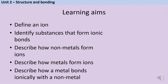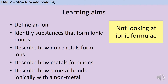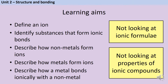By the end of this video, you should be able to define what we mean by an ion, identify substances that form ionic bonds, describe how non-metal atoms form ions, describe how metal atoms form ions, and complete extended response questions describing how a particular metal bonds with a non-metal. We're not going to look at ionic formulae or the properties of ionic compounds, as those each have their own separate videos.